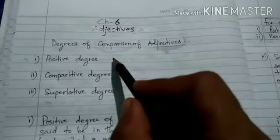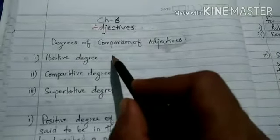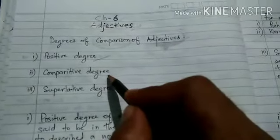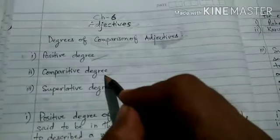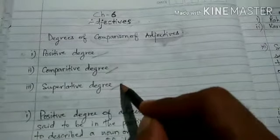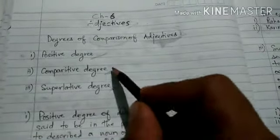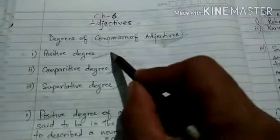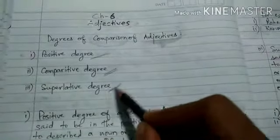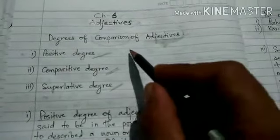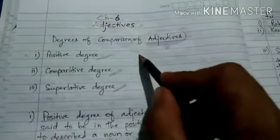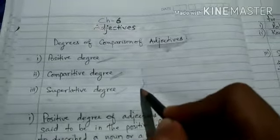There are three degrees of comparison of adjectives. They are: positive degree, comparative degree, and superlative degree. In this video, we are going to understand what is positive degree, what is comparative degree, and what is superlative degree, and how the comparison of nouns and pronouns are brought in these three degrees.